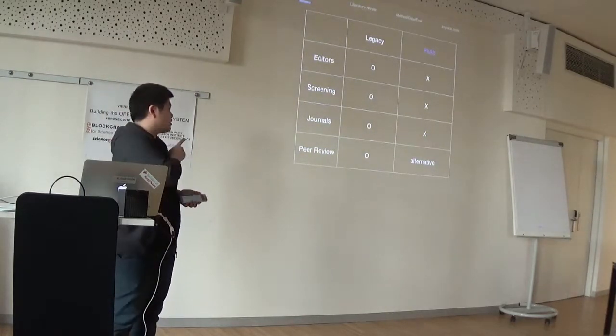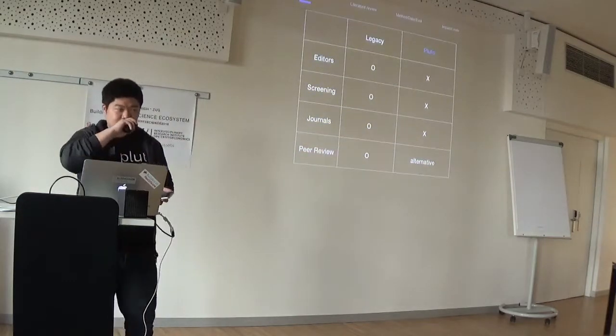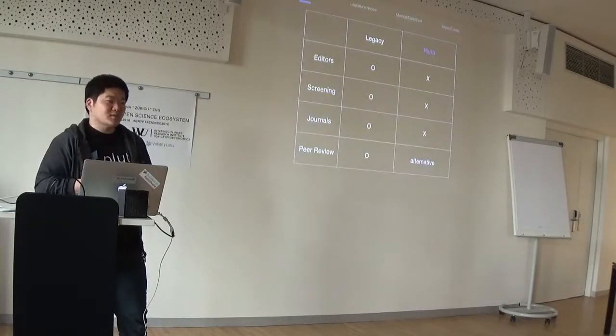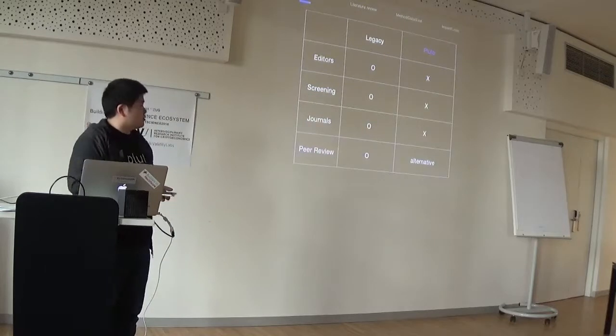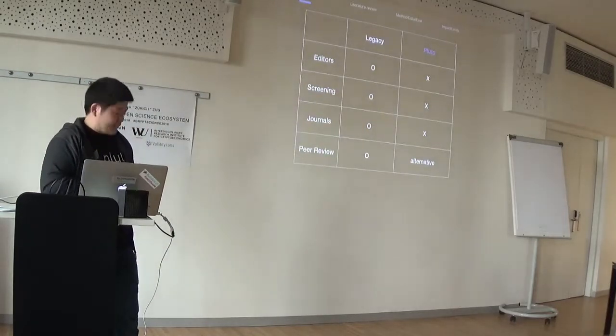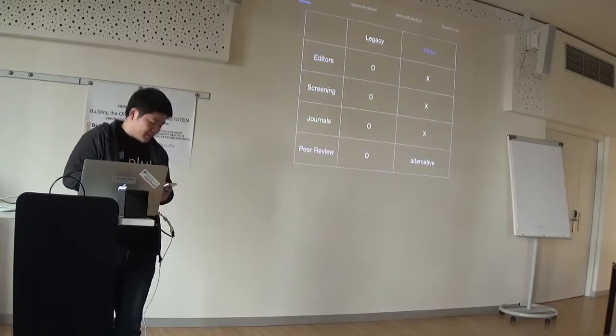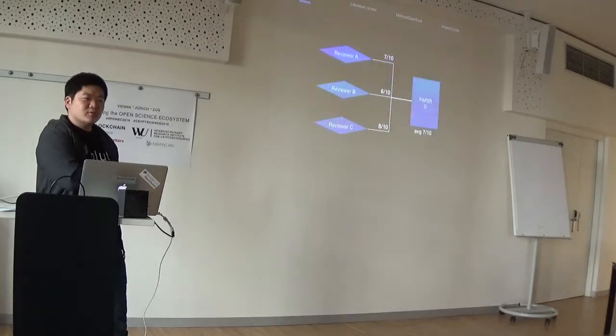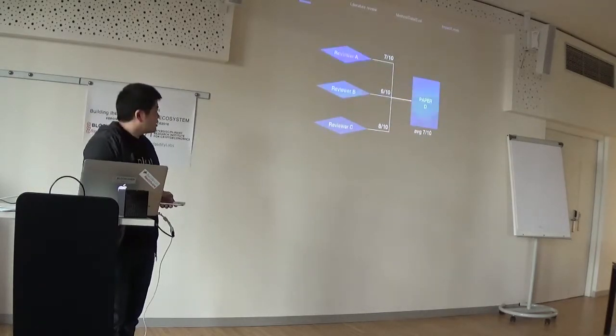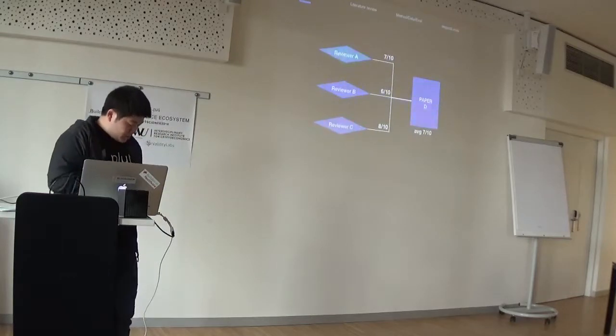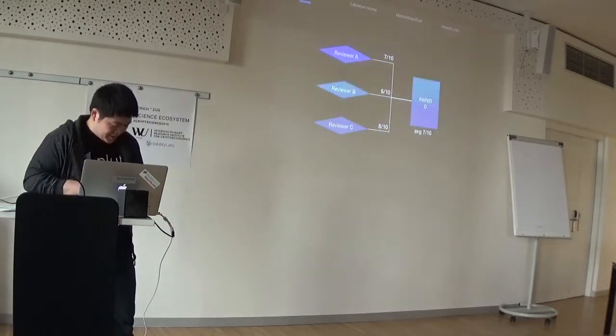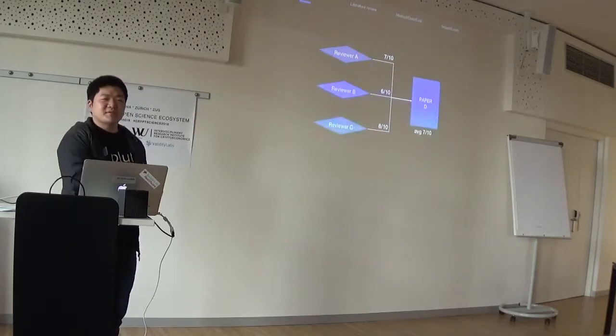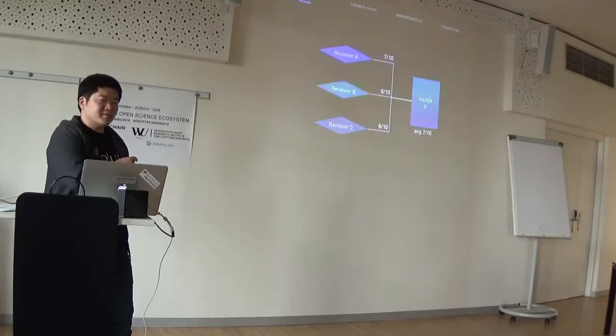One thing we wanted to keep from the legacy system was peer review, because we still need a measure of evaluation on every piece of knowledge. As a new system, we wanted to have reviewers give scores on papers quantitatively.